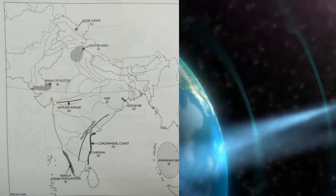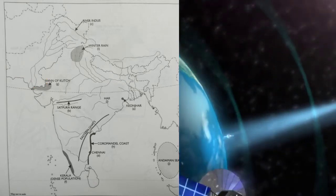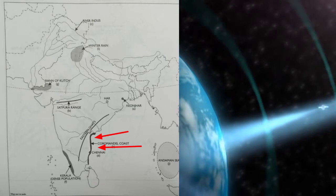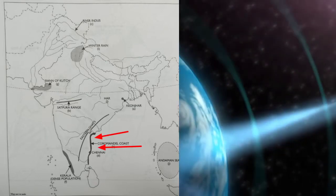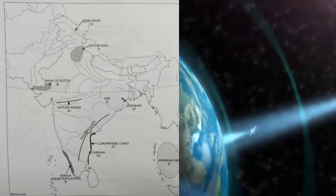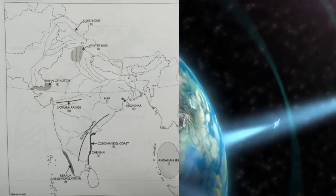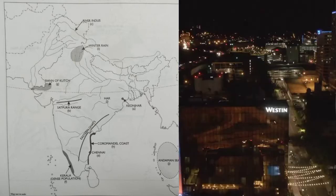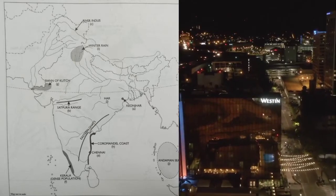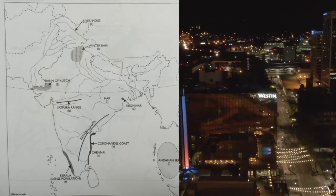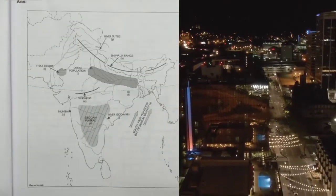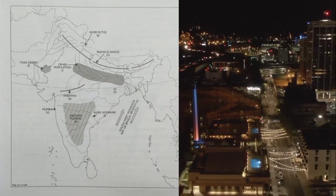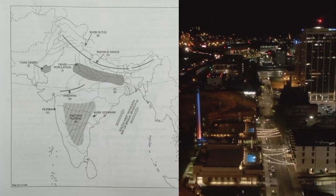Mark an area that has winter rain in North India. Print 'HR' over an area which experiences a high annual range of temperature. These are very important ICSE geography map pointing items.